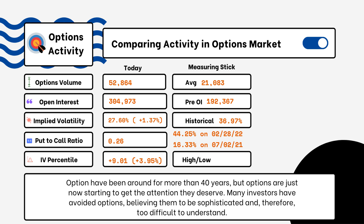We've provided details on today's option activity. What you'll be able to see here is options volume, open interest, implied volatility, put-to-call ratio, and IV percentile. One of the most popular indicators for traders is the put-to-call ratio.